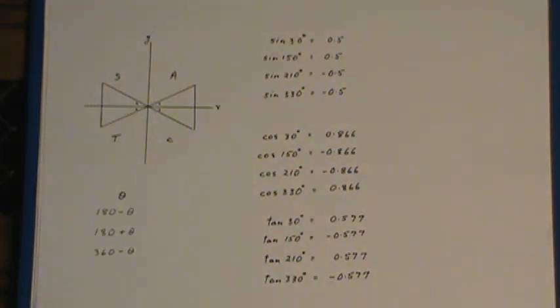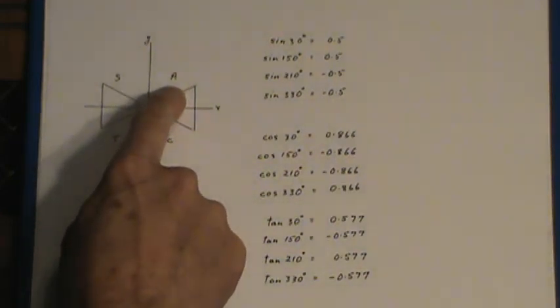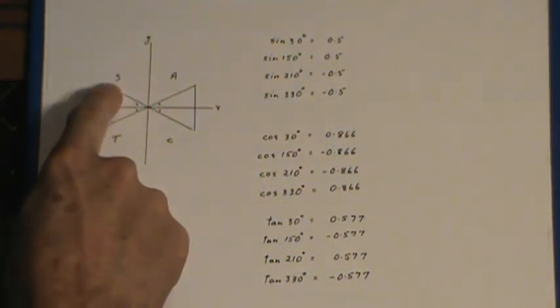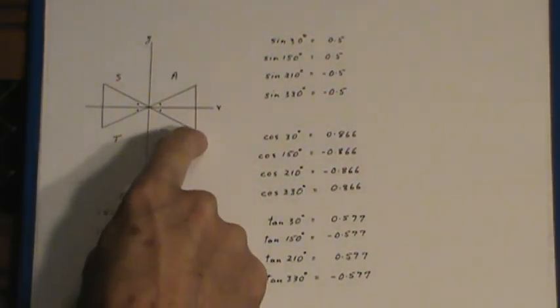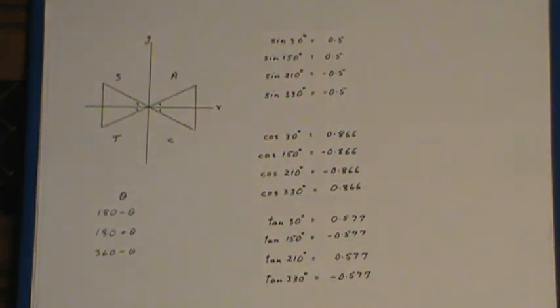It's just that you will find that they're all positive in this quadrant. Only the sine is positive here, the tan will be positive down here, and the cosine will be positive over in quadrant 4.